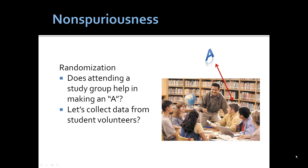Non-spuriousness can be controlled by the random assignment of group, but think about this: Does attending a study group help students make As? In my experience, when I have held extra study groups, it's the A students who attend. So, the study group has very little to do with the outcome of the perpetuation of the A grade since the non-A students typically don't attend. Collecting data from student volunteers? Students who volunteer are far more likely to be more highly motivated and more likely to be engaged in a subject matter.